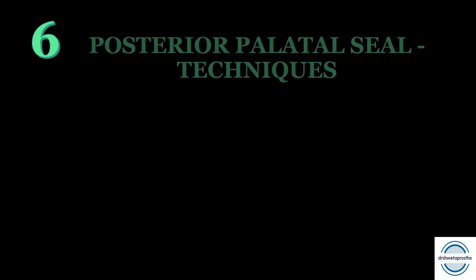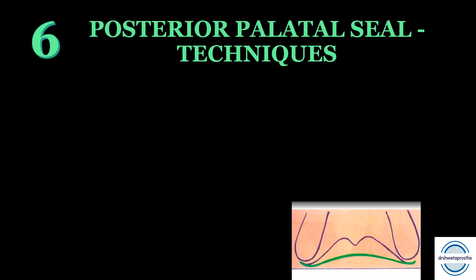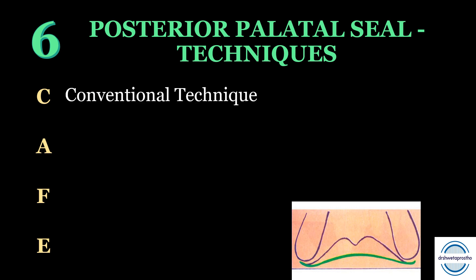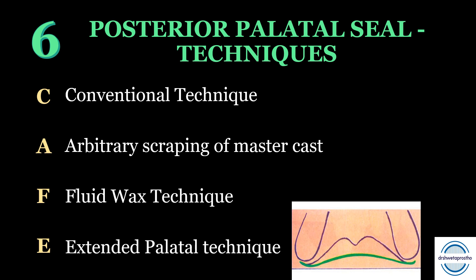The sixth mnemonic is for the posterior palatal seal — specifically the techniques or methods used to mark the posterior palatal seal or post-dam area. It is often asked in theory and in the viva. The four techniques can be remembered by the mnemonic CAFE: C for conventional technique, A for arbitrary scraping of the master cast, F for fluid wax technique, and E for extended palatal technique.